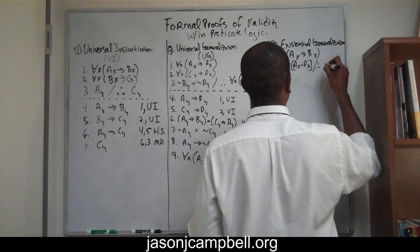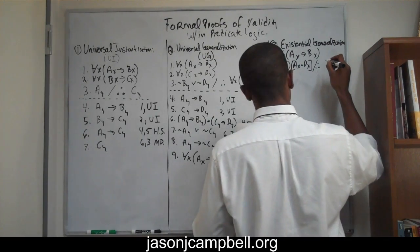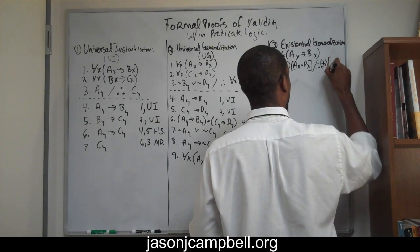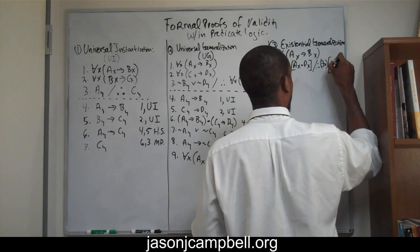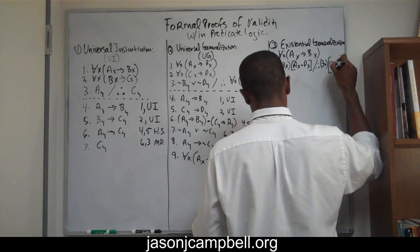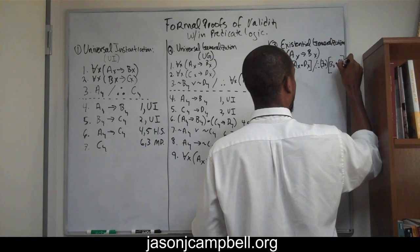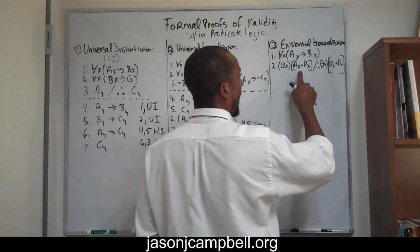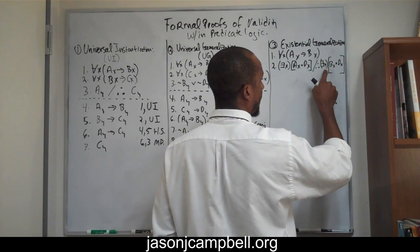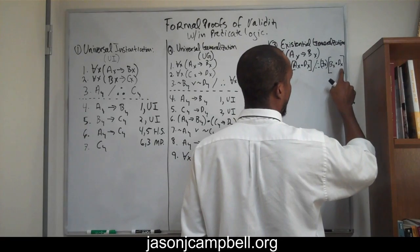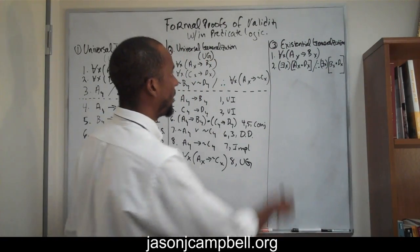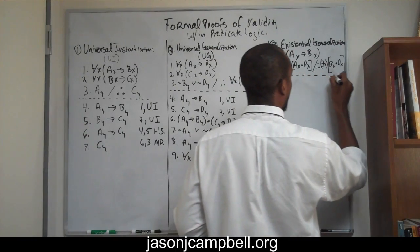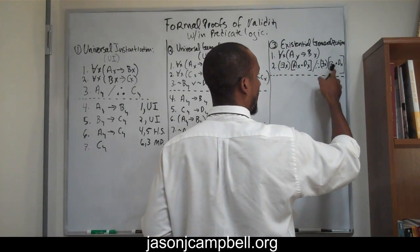The conclusion is: for some x, x is a B and x is a D. So those are the premises in total, and we have to draw our conclusion: for some x, x is a B and x is a D.